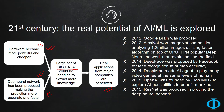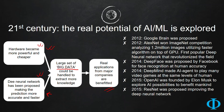Some of the most noted milestones: in 2012, Google Brain was proposed, and AlexNet won the ImageNet competition analyzing almost 1.2 million images using a faster algorithm on GPU. In 2014, DeepFace was proposed by Facebook, and DeepMind made AI agents that could play many video games at the same level of human accuracy. In 2015, OpenAI was founded by Elon Musk, and ResNet was proposed, improving the deep neural network. Lots of discoveries happened and the virtuous cycle started.